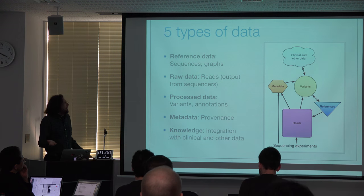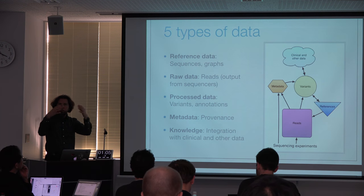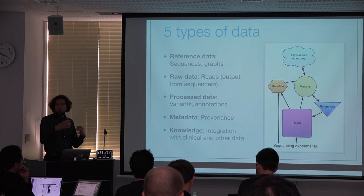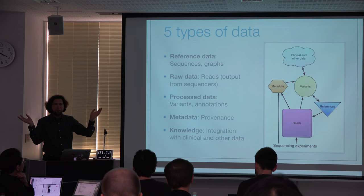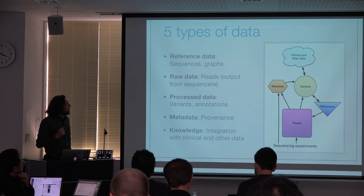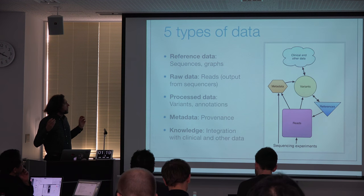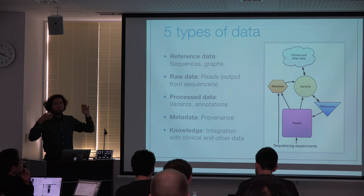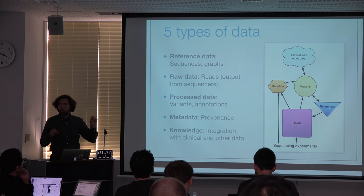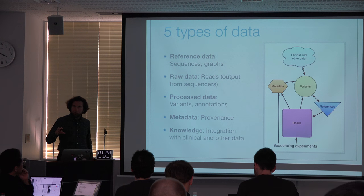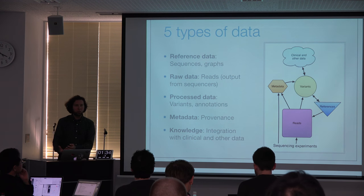As best as I can make out, we have five types of data. We have the reference data that a lot of people are talking about here. Within GA4GH, we're mostly talking about just the human genome, GRCh38, whatever, but I'm hearing about a lot of different genomes. We have the raw data — the reads from the sequencers, RNAseq — the processed variants, and various annotations. We have the metadata, which is critical and just now beginning to get recognition within GA4GH, that traces the provenance of all the other data going through the system.